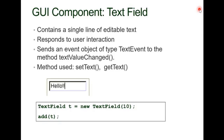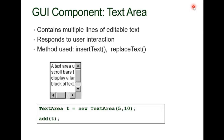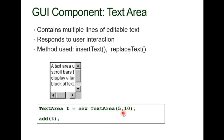TextArea is editable and contains multiple lines. The two key methods are insertText() and replaceText(). To define a TextArea, you create an object from the TextArea class: new TextArea(5, 10) — where 5 is the number of rows and 10 is the number of columns, meaning 10 characters wide. You get five rows and ten columns, and then you use the add() function to add the TextArea.